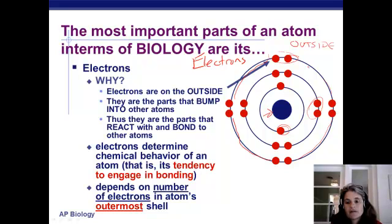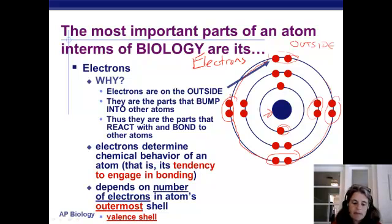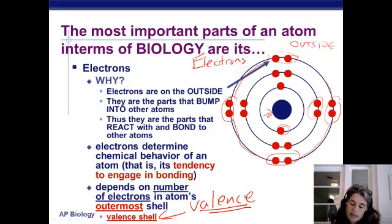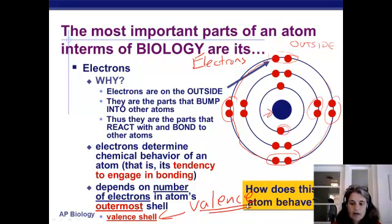How many electrons are going to be in this outermost shell? That's going to determine how this atom interacts with other atoms in its neighborhood that it might bump into. So please know this term, valence shell. Valence shell, because those valence electrons are the ones that we care about.